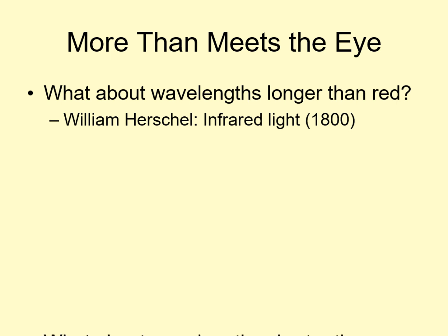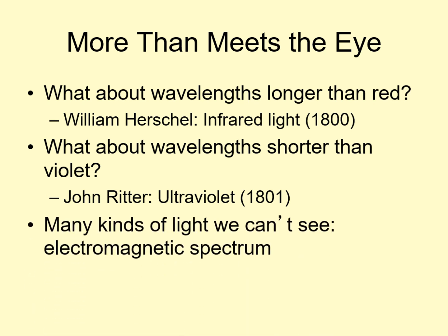The following year, John Ritter was also experimenting with this sort of rainbow, but he was shining it on a kind of light-sensitive chemical, a precursor to photography. He was surprised that the chemical reacted outside of the rainbow. Since this happened beyond the violet side, he called it ultraviolet. This was the beginning of our understanding that there are many kinds of light that we can't see.